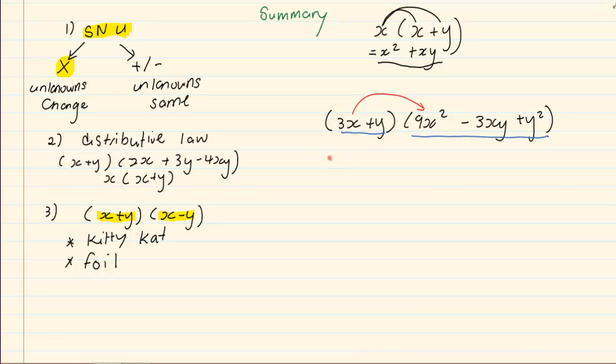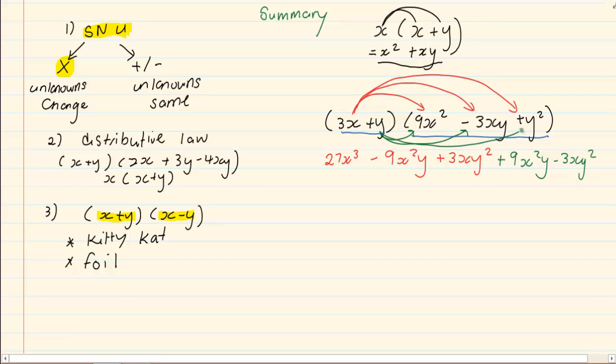So, 9 times 3, 27x cubed minus 9x squared y plus 3xy squared. Then we are going to multiply the second term in the first bracket with every term in the second bracket. So, we have got plus 9x squared y minus 3xy squared plus y cubed.